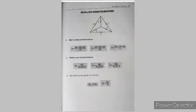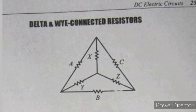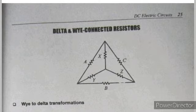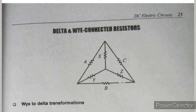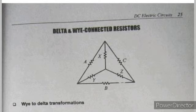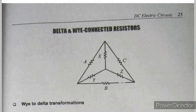Next is the Y-delta (wye-delta) transformation — a bit more complex in AC systems but here it's just conversion for DC circuits. You can convert Y to delta or delta to Y depending on which simplifies the circuit more. The delta connection looks like a triangle; the Y connection looks like the letter Y.